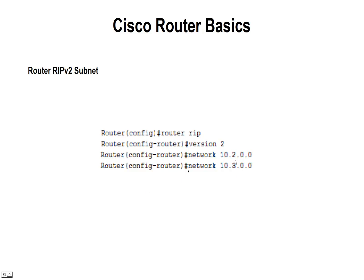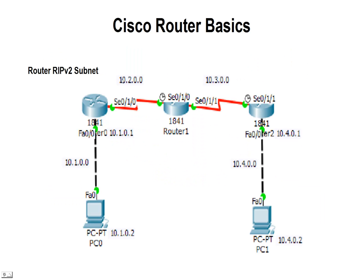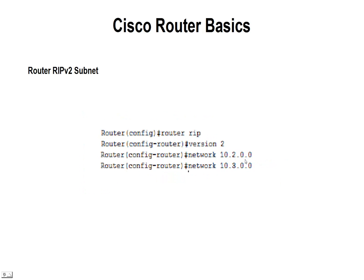Going to our second router, we're going to go ahead and set 'router rip' and again 'version 2'. This time we're going to set the two networks as 10.2 and 10.3. Going back to our network, you can see those are the two networks — 10.2 and 10.3 — attached to that second router. It's important to make sure you include the networks that are attached, so that when RIP passes that information, it passes the correct information onto the other two routers.